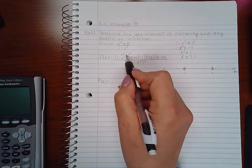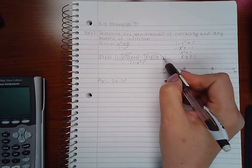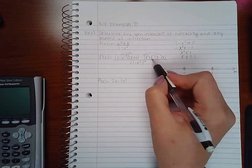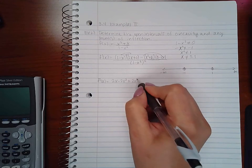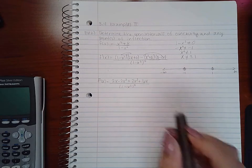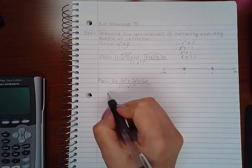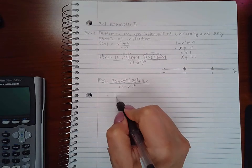So I'm going to distribute this 2x. I get 2x minus 2x cubed, and here I'm really distributing a positive 2x, so positive 2x cubed and positive 16x. That is going to cause the two terms with 2x cubed to cancel, leaving me with 18x over (1 - x²)².